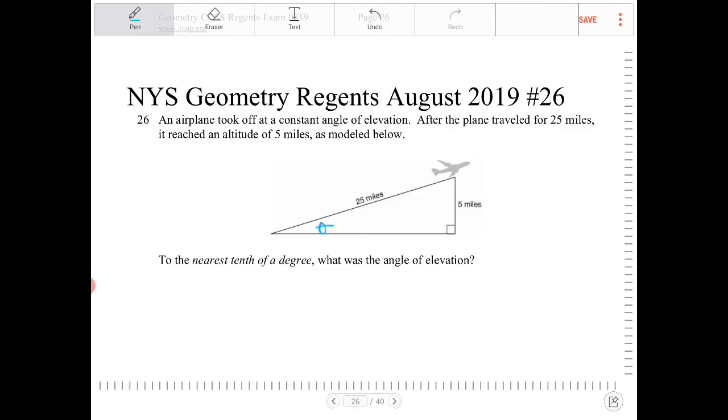And based on the information that's given right now, the five miles, that vertical height, is opposite of that angle and 25 miles is the hypotenuse.